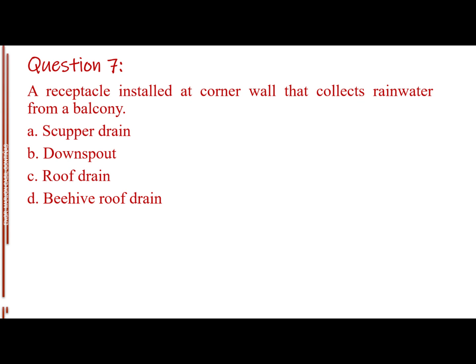Question number seven. A receptacle installed at corner wall that collects rainwater from a balcony. Letter A, Scupper Drain. Letter B, Downspout. Letter C, Roof Drain. Letter D, Beehive Roof Drain. The answer is Letter B, Downspout.